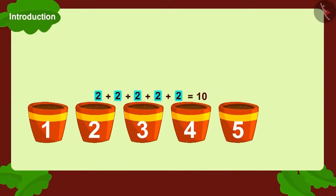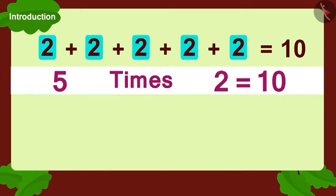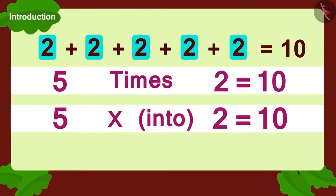Each pot has two seeds and there are five such pots. We can write it as five times two, or we can also write it as five multiplied with two.